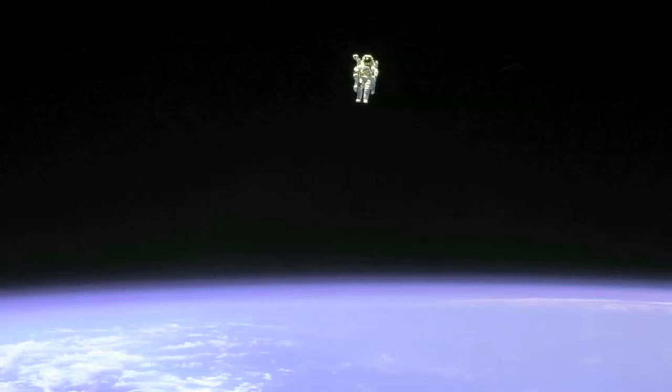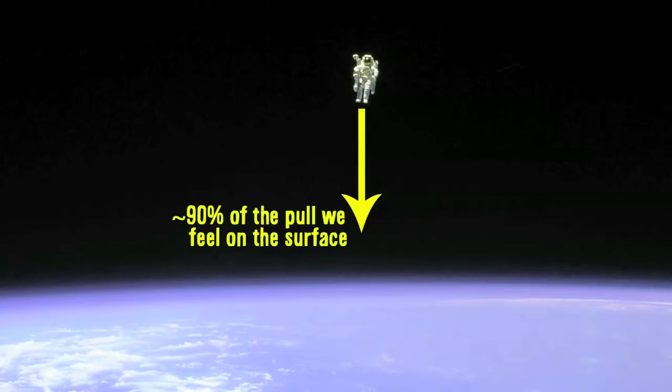Astronauts orbiting around the Earth experience pretty much the same gravitational pull that you and I are feeling right now. The major difference is that those astronauts are falling, constantly, towards Earth, but their angular velocity is so large that they're falling just as fast as Earth curves away from them.